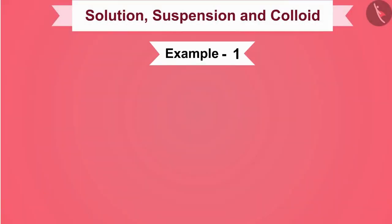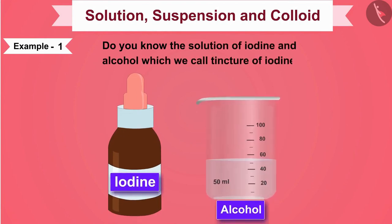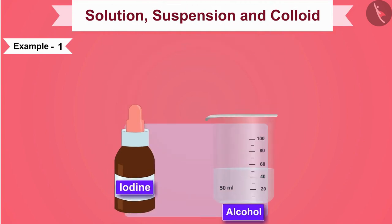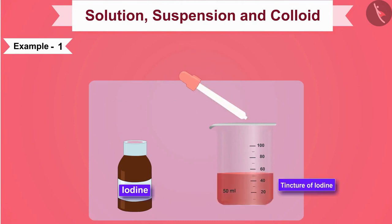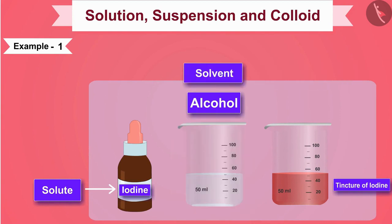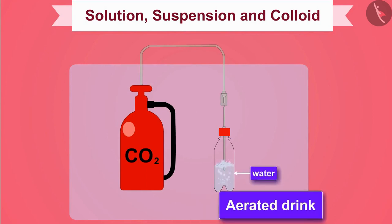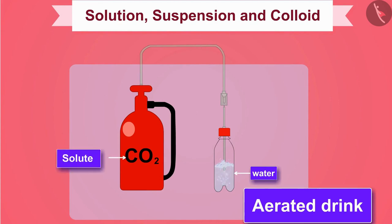Let us understand this with an example. Do you know the solution of iodine and alcohol which we call tincture of iodine? We make tincture of iodine by dissolving iodine in alcohol. Iodine is taken in small amount and alcohol in large amount, so iodine is the solute and alcohol is the solvent. Aerated drinks are also a solution in which carbon dioxide is dissolved in water; therefore, carbon dioxide is the solute and water is the solvent.